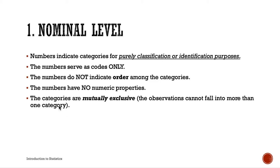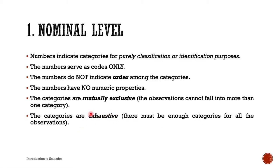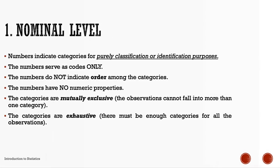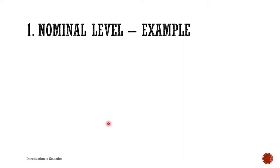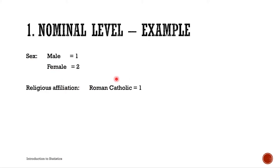Categories in the nominal scale are also exhaustive — there must be enough categories for all observations. For example, gender: male is assigned 1, female is assigned 2. Another example is religious affiliation: Roman Catholic is 1, Baptist is 2, INC is 3, Islam is 4, and so on.